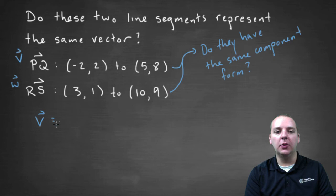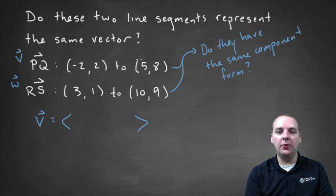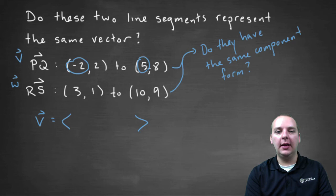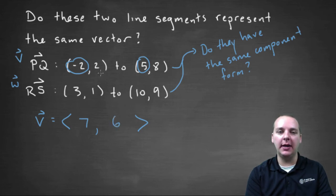What's vector V? We do terminal minus initial. For the first component, take the x-value of terminal point Q minus the x-coordinate of initial point P: five minus negative two is seven. For the second component, eight minus two gives us six. So vector V in component form is seven, six.